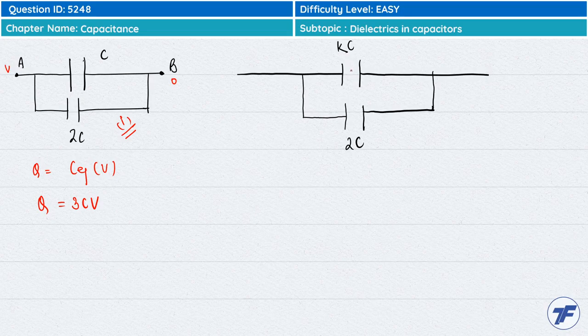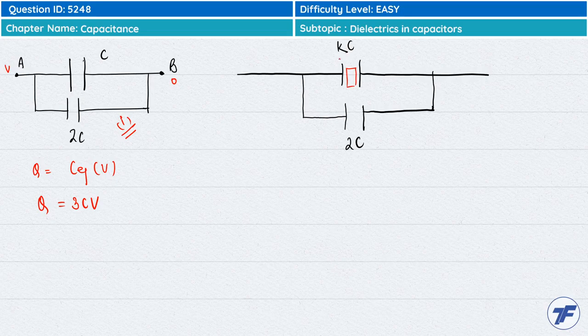Now battery is removed and a dielectric slab is inserted, and the capacitance becomes K times its previous value.